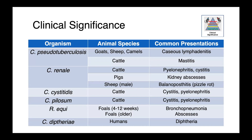Corynebacterium pseudotuberculosis is most notably the cause of caseous lymphadenitis in sheep, goats, and camels, and also causes mastitis in cattle. The Corynebacterium renali group are all associated with urinary tract infections: C. renali causes pyelonephritis and cystitis in cattle; in pigs, we see kidney abscesses; and in male sheep, we see balanoposthitis — inflammation of the penis and prepuce, colloquially known as pizzle rot. C. cystididis and C. pellosum both cause cystitis and pyelonephritis in cattle. Rhodococcus equi causes bronchopneumonia in foals aged 4–12 weeks and abscessation in older animals. Corynebacterium diphtheriae causes diphtheria in people.